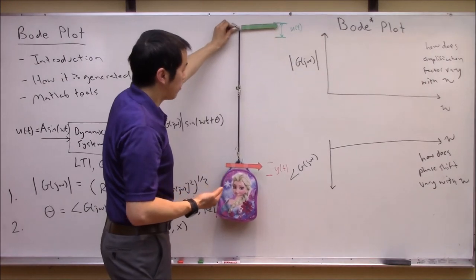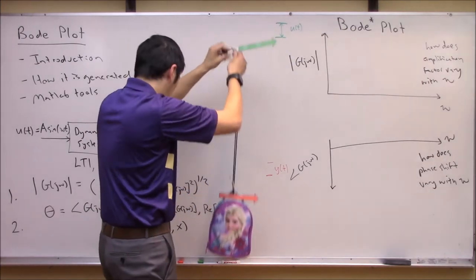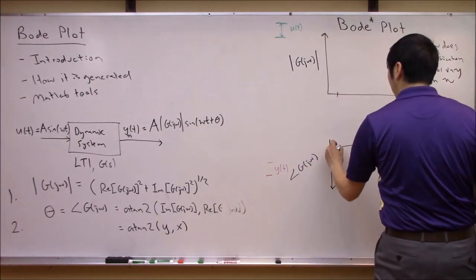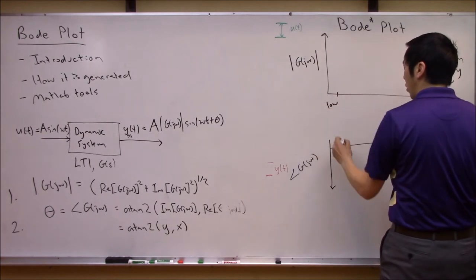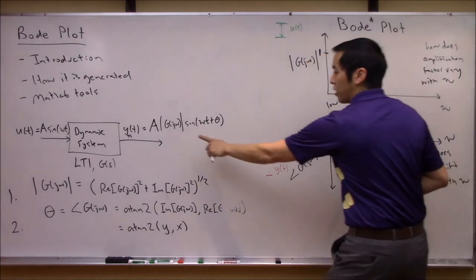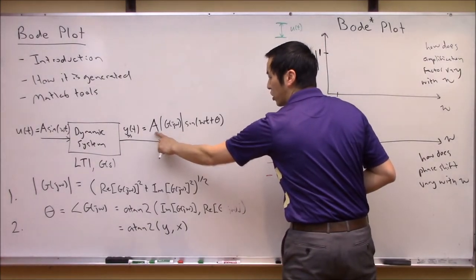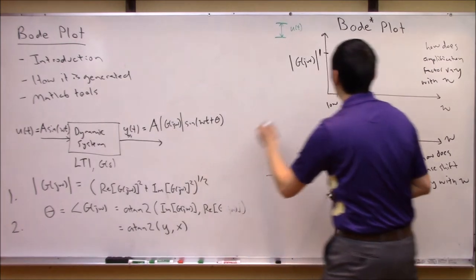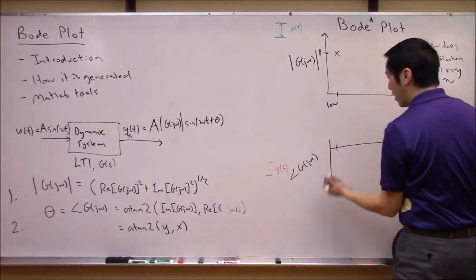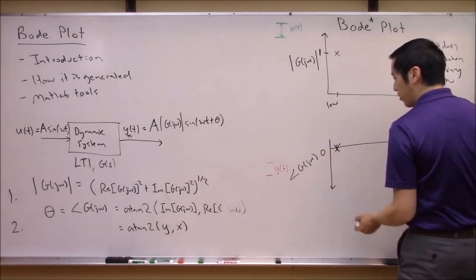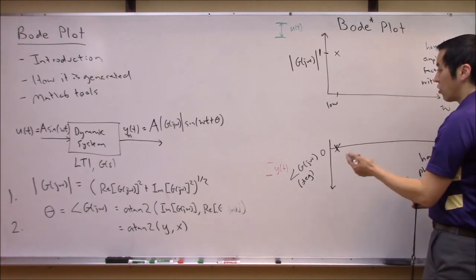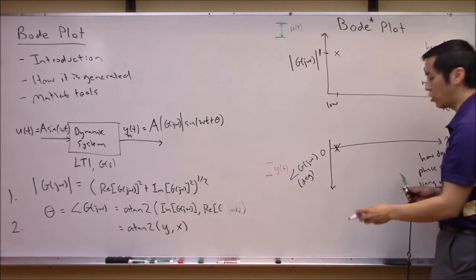A Bode plot would characterize this on a graph. At low frequencies — let's say 0.1 radians per second — you can see the amplification factor is approximately one. You put in plus or minus two inches and you get out plus or minus two inches. And the phase shift is basically zero degrees. So here's our first data point: at low frequencies, no phase shift and no amplification. Let's now ask what happens when we increase the frequency — that's the whole point of frequency domain analysis.